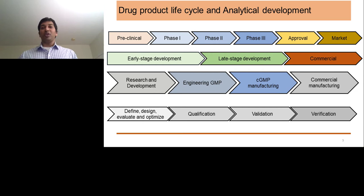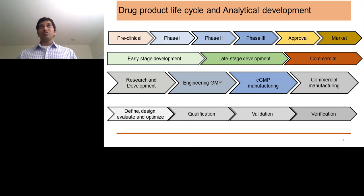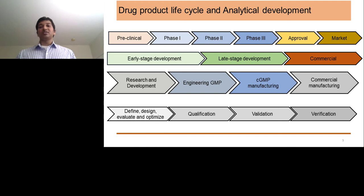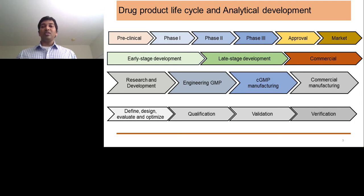Once you have approval and go to market, whatever development happens is related to commercial development. Putting these perspectives on a manufacturing scale: preclinical to phase one still includes research and development of the biologic. Once you have a phase one product and move into phase two — where phase one is done with efficacy and safety studies — phase two is where you try to develop these biologics, really bridging the R&D product, transferring it into clinical Good Manufacturing Practices through an engineering process. Phase three products should be carried out under GMP manufacturing, and commercial products through a commercial manufacturer.